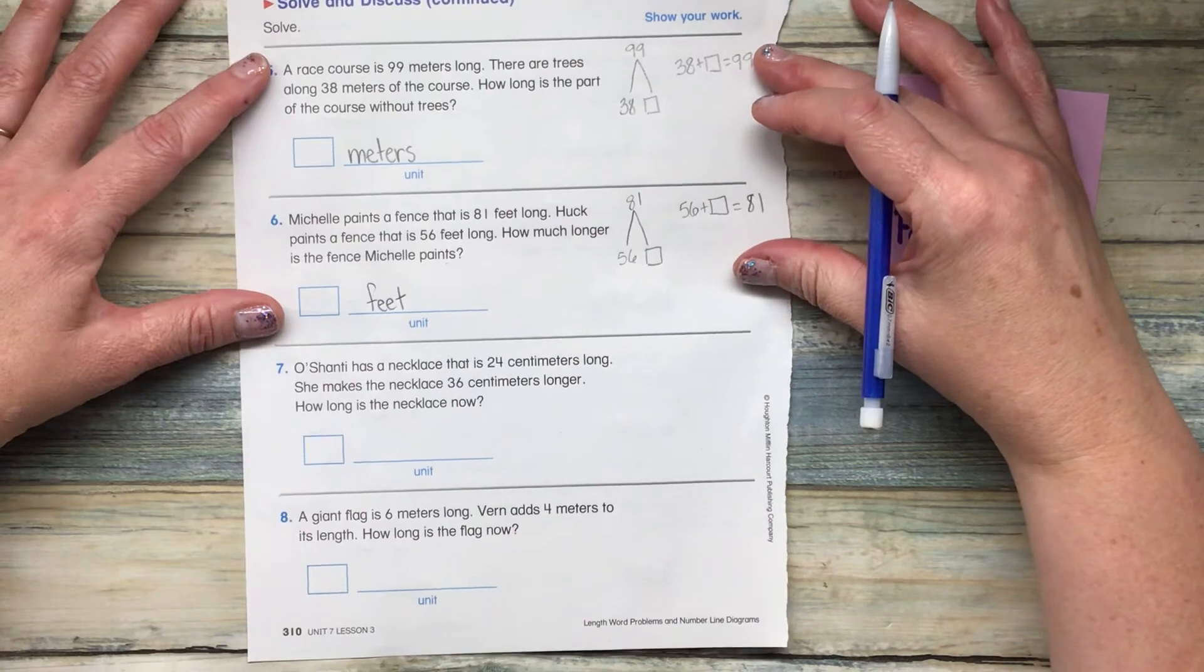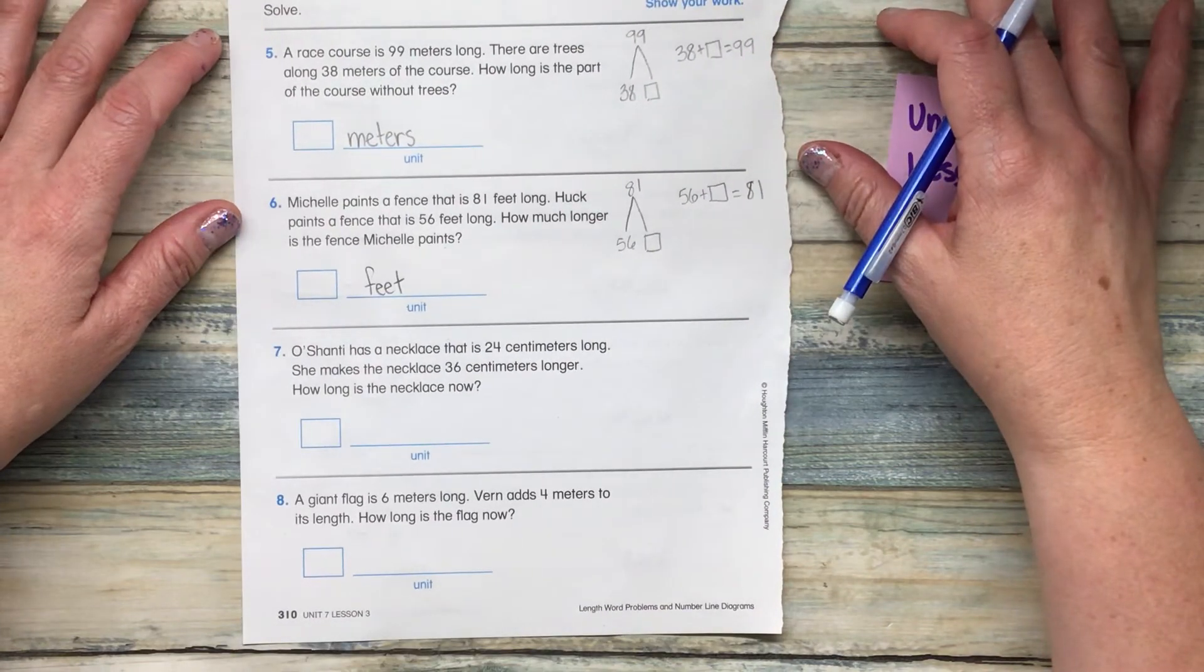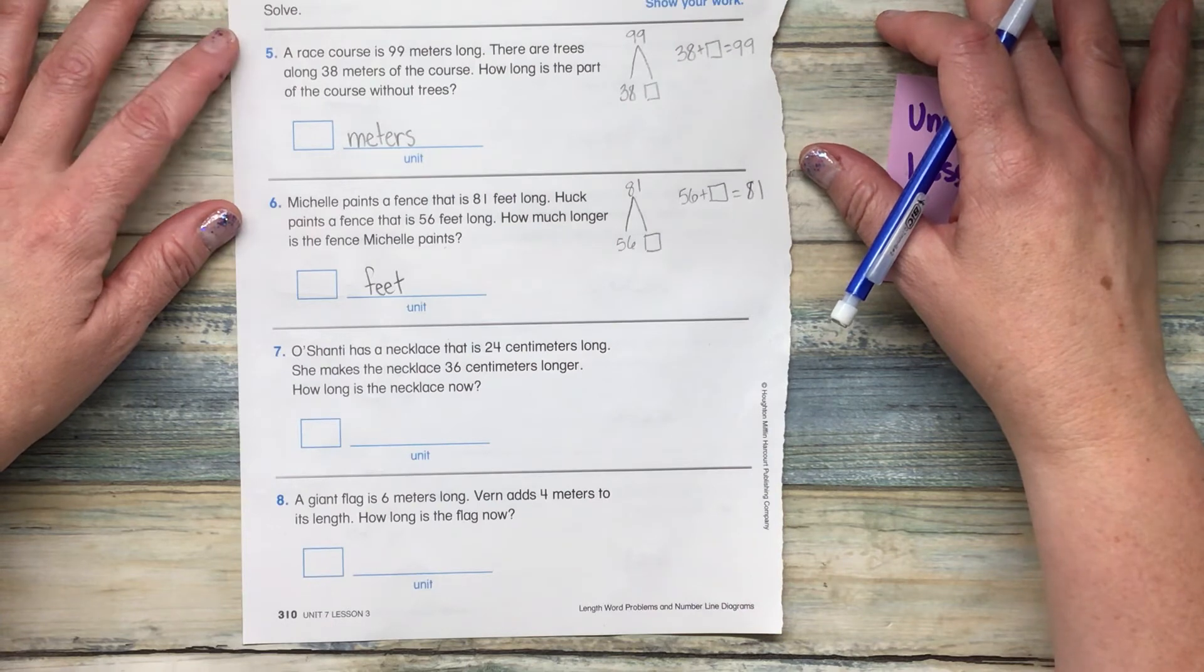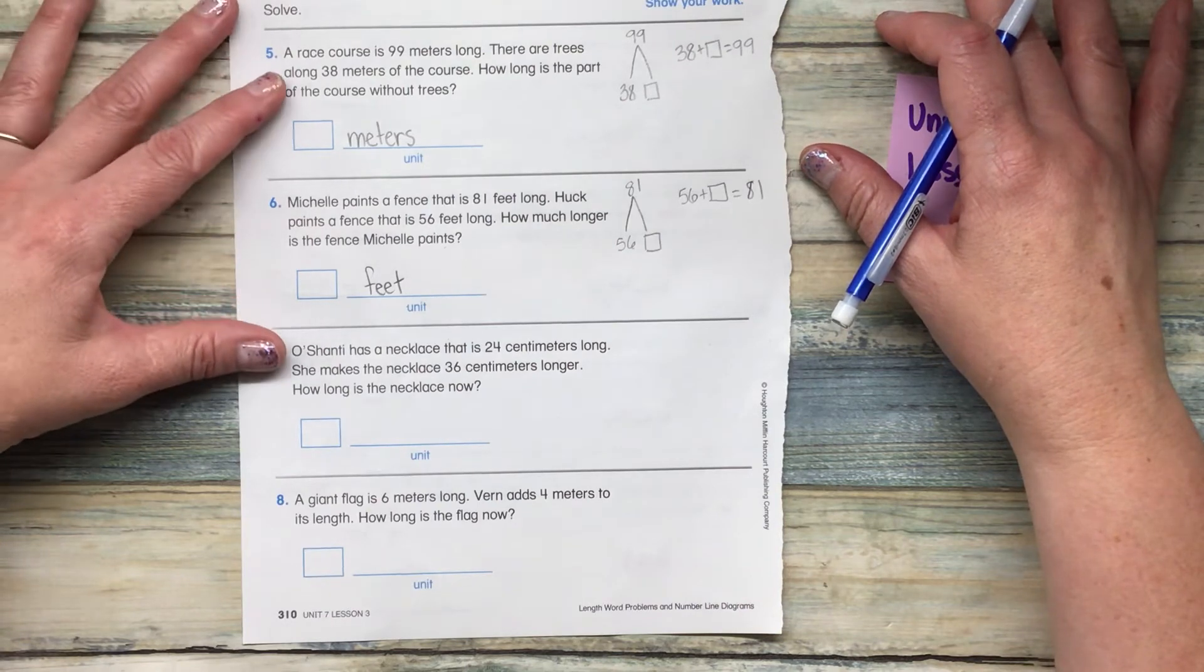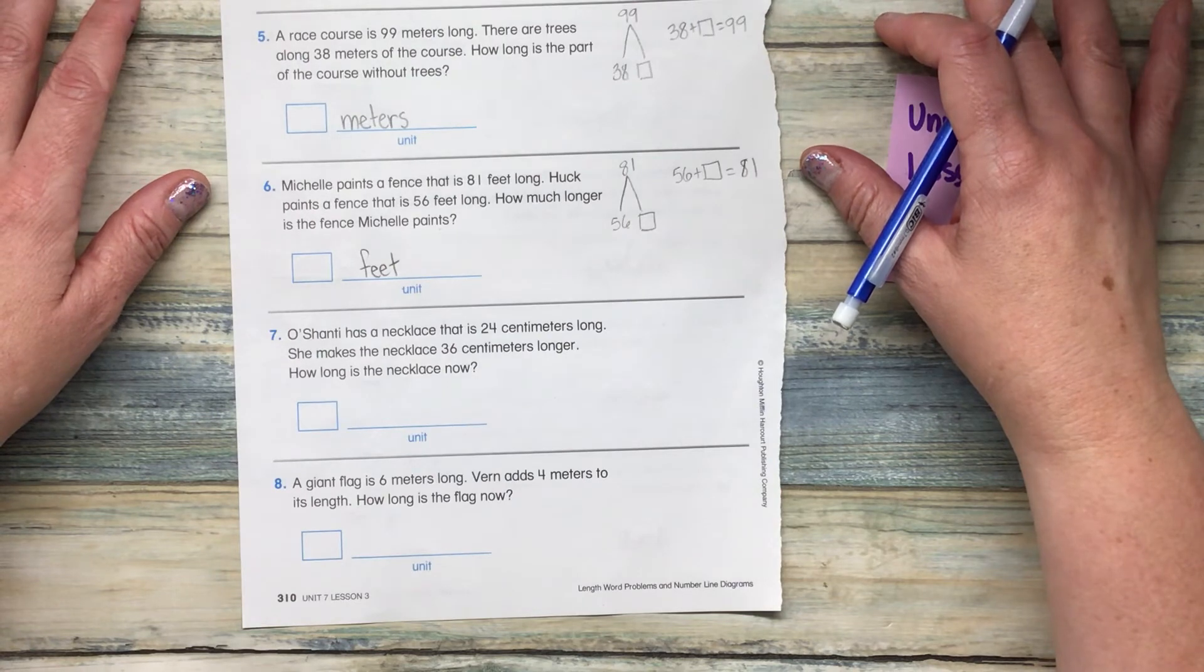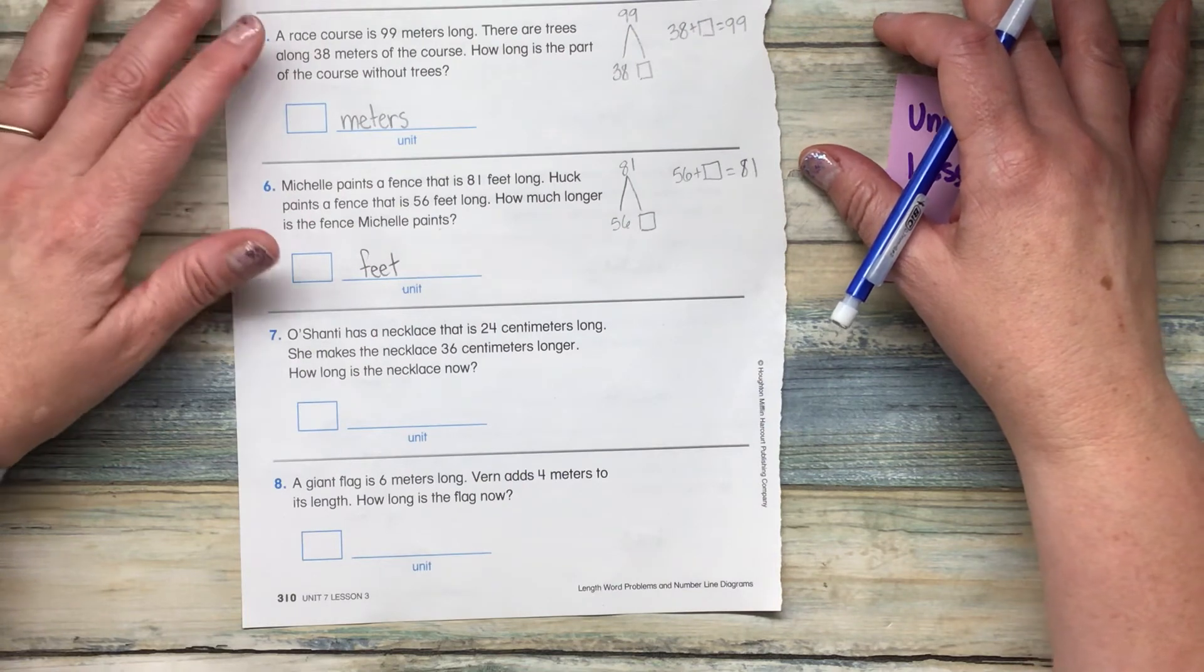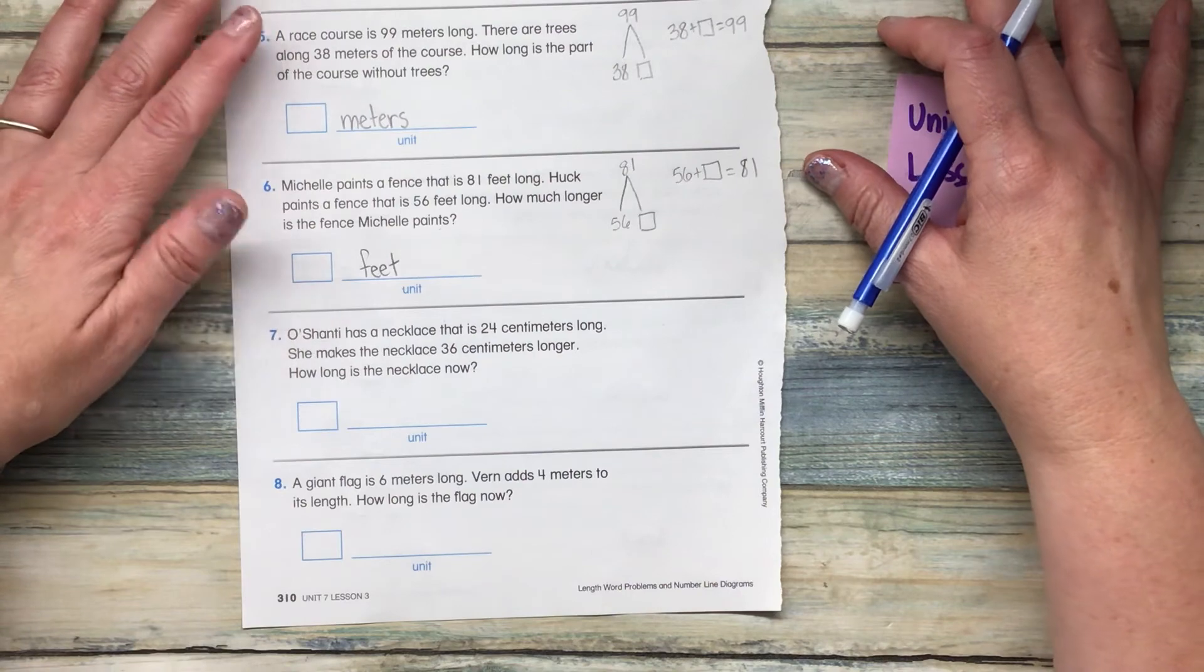You guys are doing great. We're getting to the end of it. This is pretty straightforward math. But I do understand that it takes a little bit of time, energy, and brain work. Oshanti has a necklace that is 24 centimeters long. She makes the necklace 36 centimeters longer. How long is the necklace now?